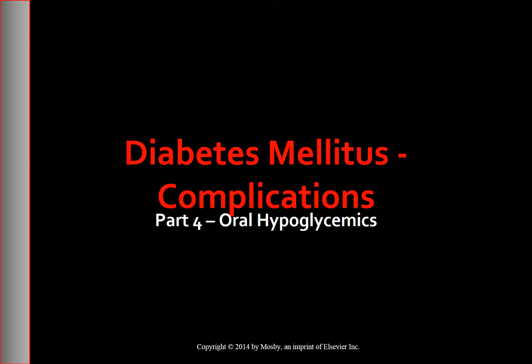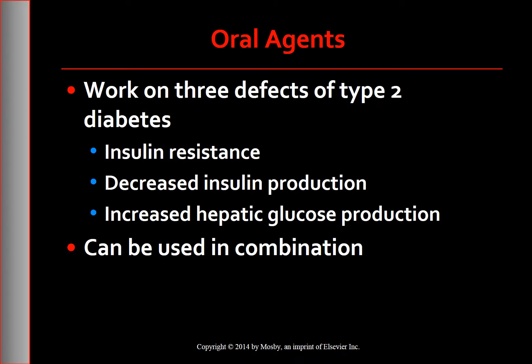Today's topic is oral hypoglycemics used to control blood sugars in diabetes mellitus. Oral agents work on three defects of type 2 diabetes: insulin resistance, decreased insulin production, and increased hepatic glucose production. These drugs may be used in combination with agents from other classes or with insulin to achieve blood glucose control.